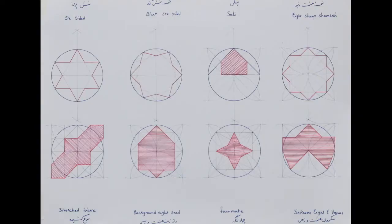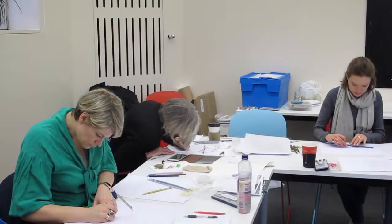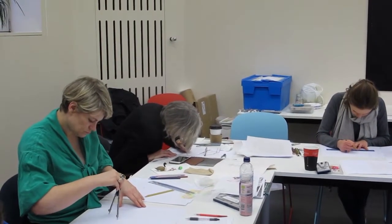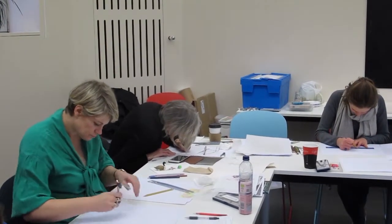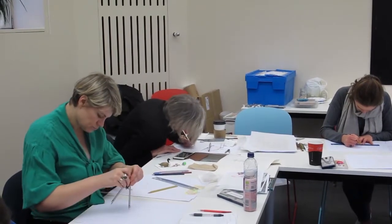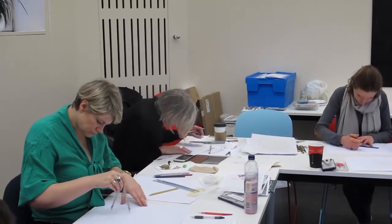They are basically universal patterns. Everything starts from a circle. Circle is a symbol of heavens and square is a symbol of earth. So it's the combination of the two that we see in all the temples and sacred places, including mosques.